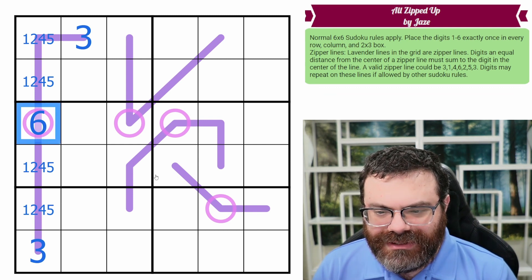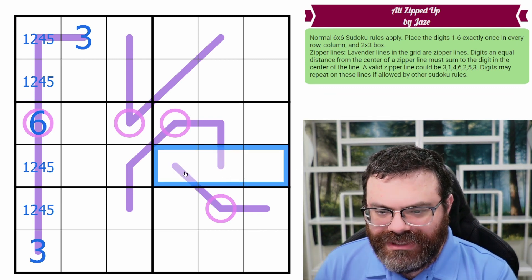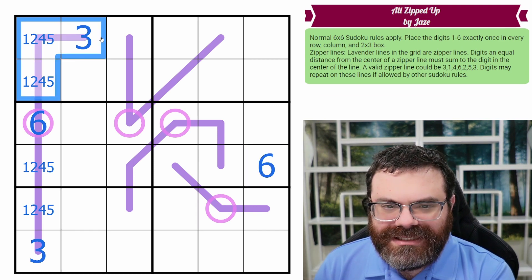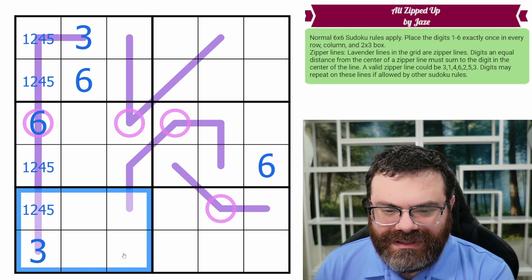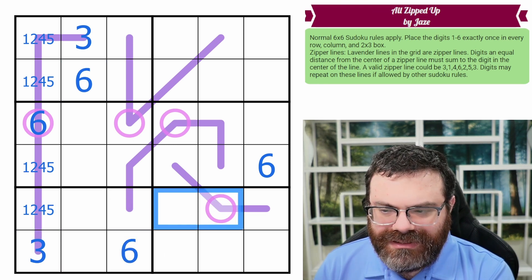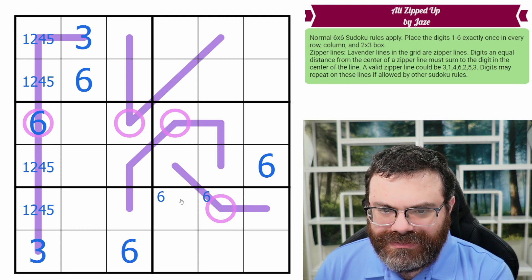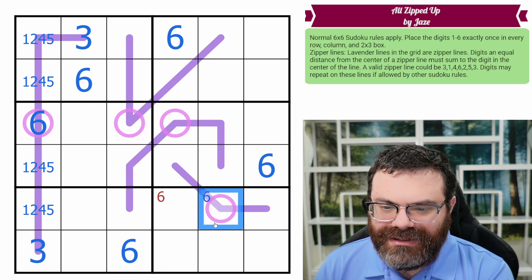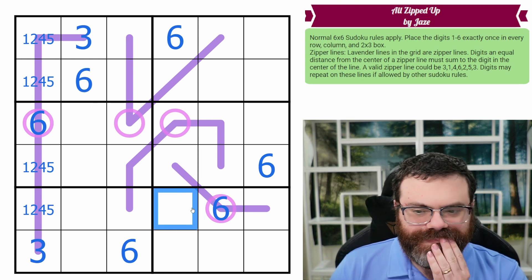Maybe we could follow sixes around. We need a six over here, and they can't go on the lines. I need a six in this box, it goes here. I need a six in this box, it goes here. Six can be in either of these. What about up here? Six has to go here and here. There we go. Sixes are done. Nice.